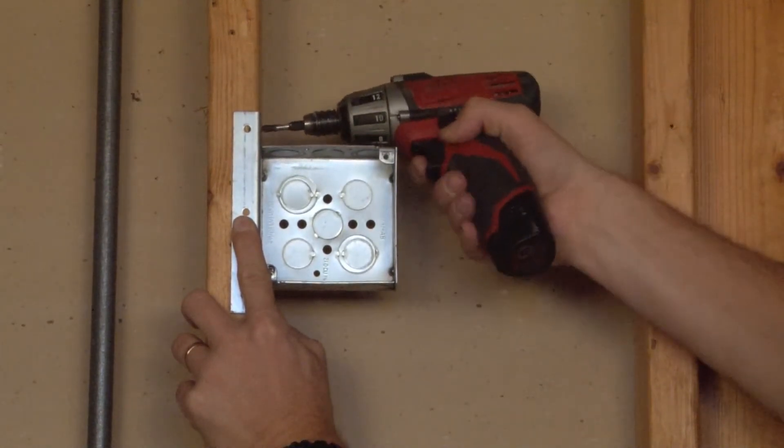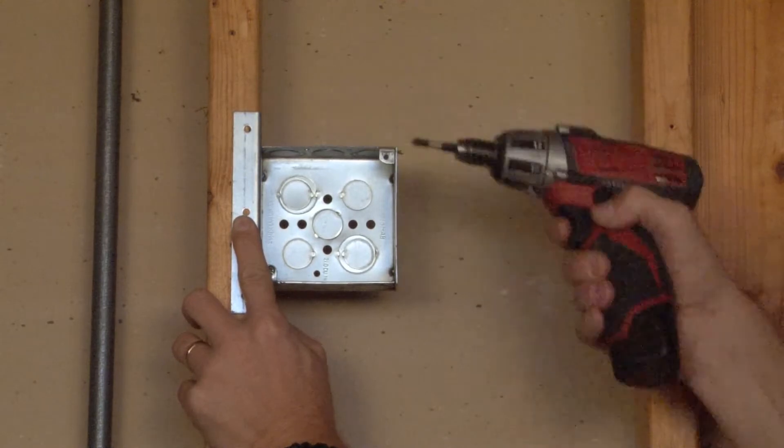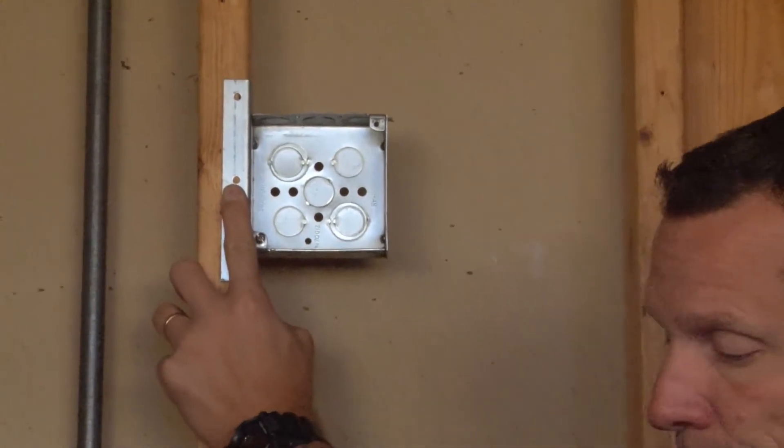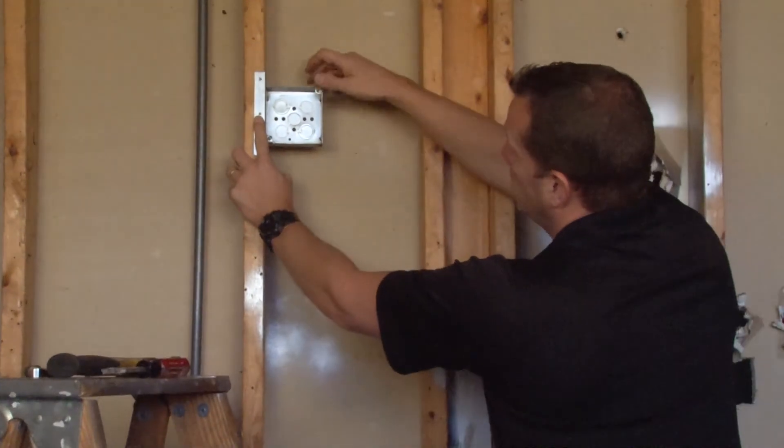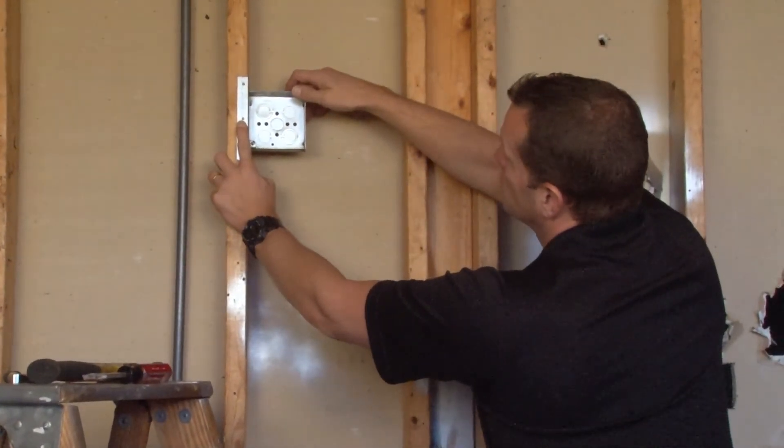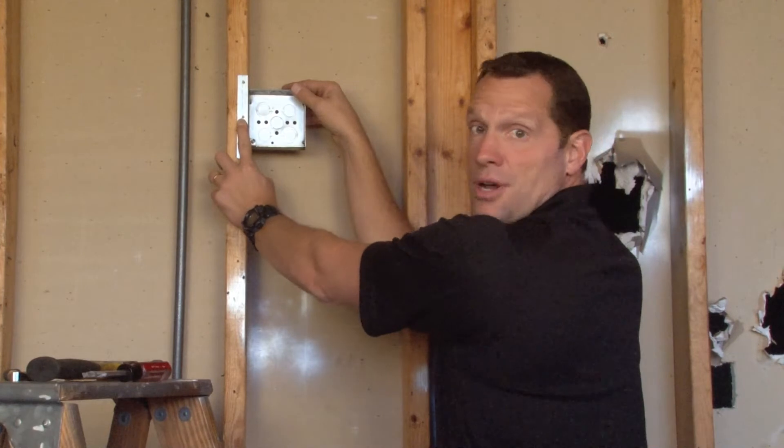Or they can mount it directly into the side of the stud on screw holes in the top and bottom of the bracket. This box comes complete with pre-installed 832 screws and works with all standard device rings and covers.